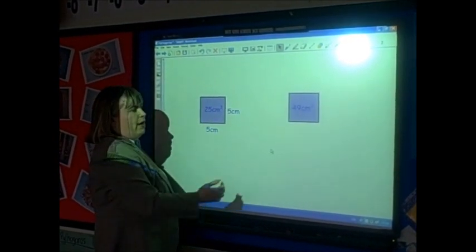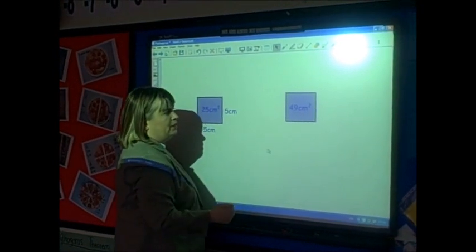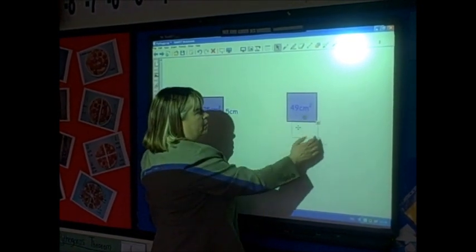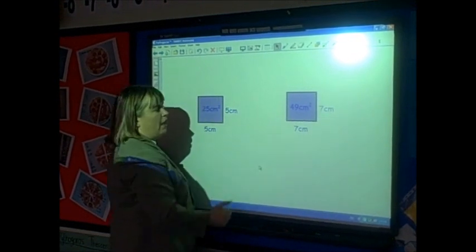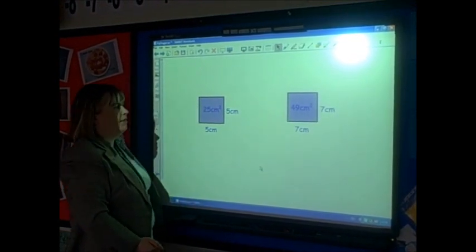If I know the area is 49 centimetres squared, then to find the length of each side, I simply take the square root of 49 and that tells me the length of each side is 7 centimetres.